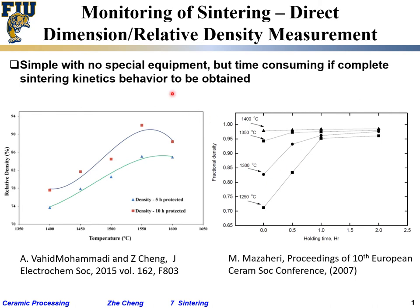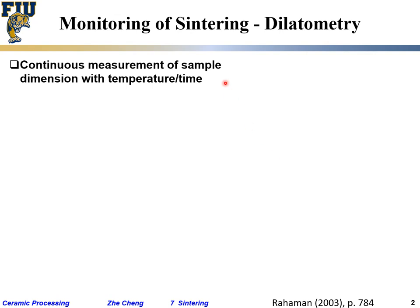This approach does not need special equipment other than a furnace — you take one sample, sinter it, measure density, dimension, and weight. However, it takes many samples. On the other hand, people can do continuous monitoring of sintering as temperature and time change using equipment called dilatometry. You may have heard of this word or even used this instrument.